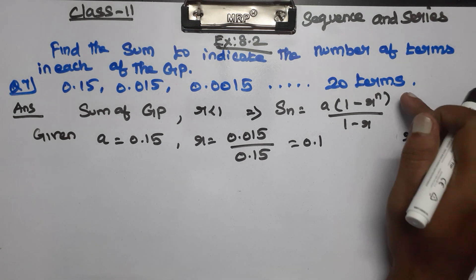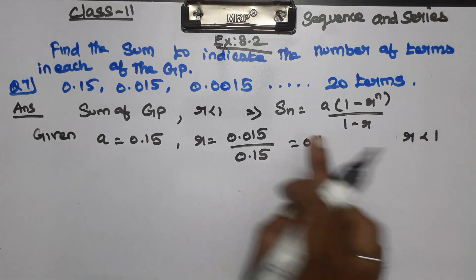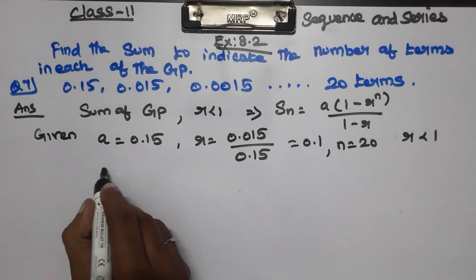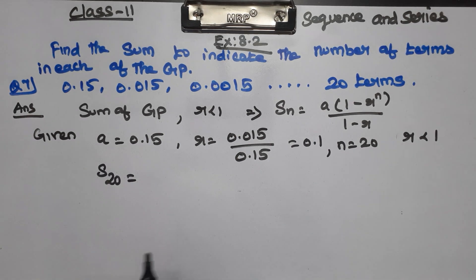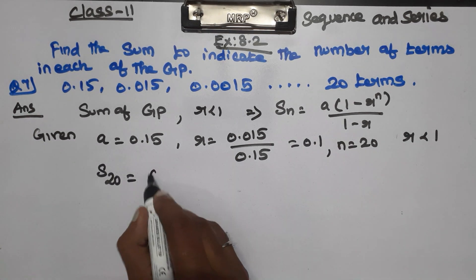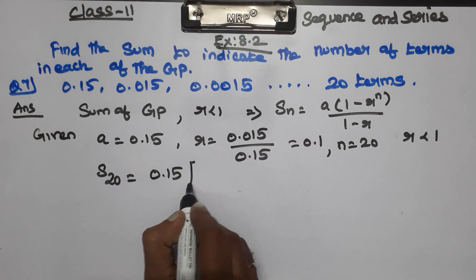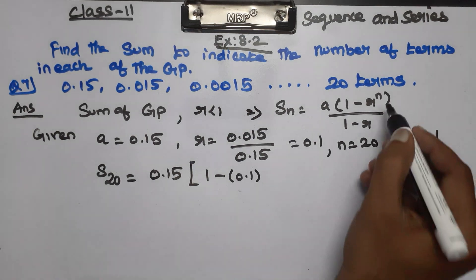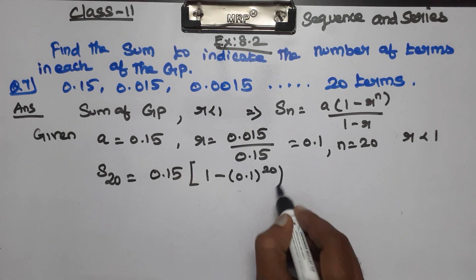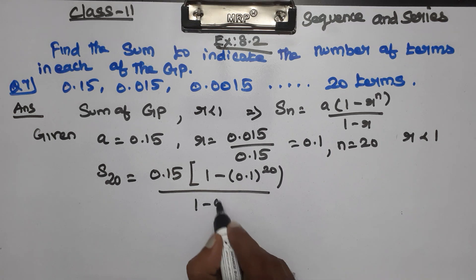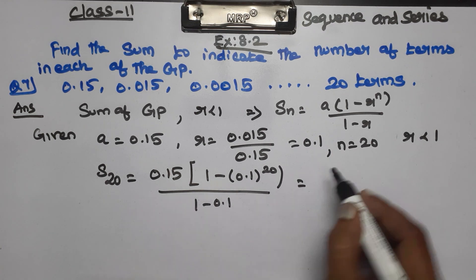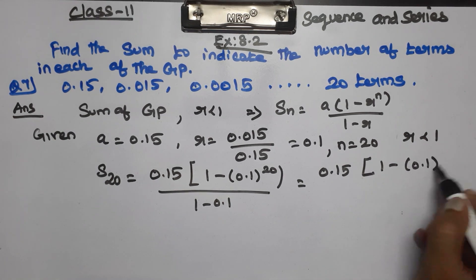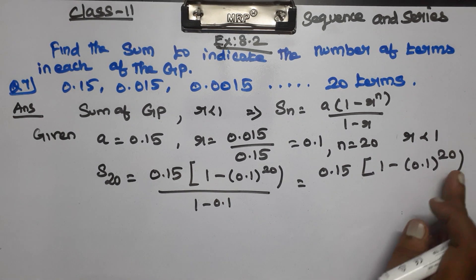We have 20 terms, so n equals 20. Substituting into the formula: Sn equals a into (1 - rⁿ) divided by (1 - r), which gives 0.15 into (1 - 0.1²⁰) divided by (1 - 0.1). Simplifying, 1 minus 0.1 is 0.9.